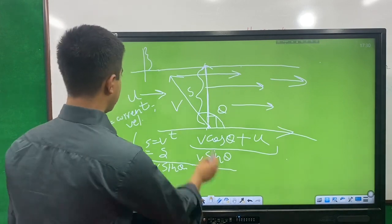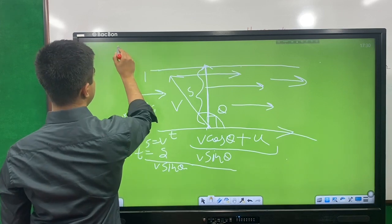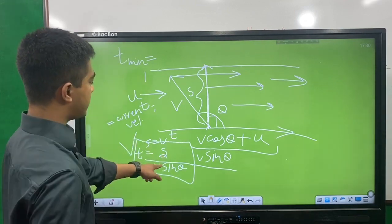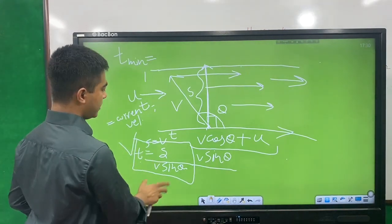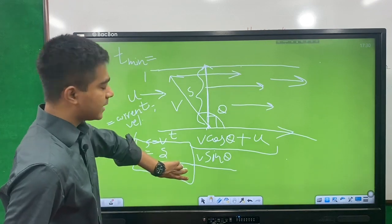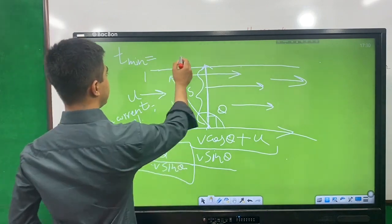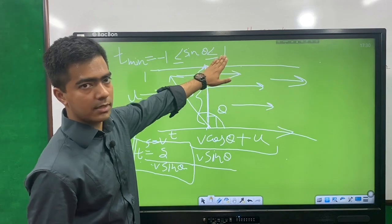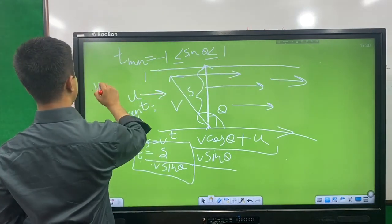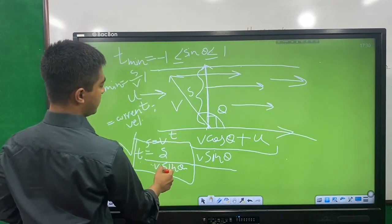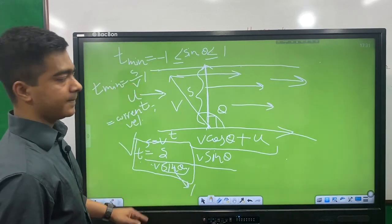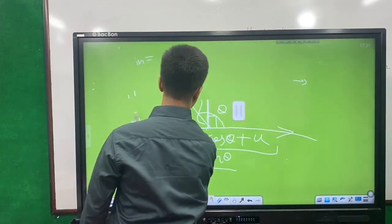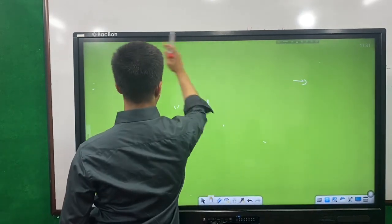We need to find minimum time. For minimum time, T equals S by V sin θ. T is minimum when sin θ is maximum. Sin θ is maximum when sin θ equals 1, i.e., θ equals 90°. Therefore, T minimum equals S by V.